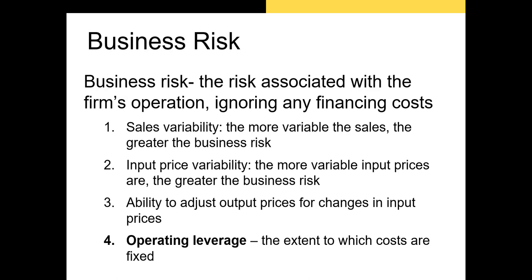There are at least four business risk factors to highlight. The first is sales variability — if a firm's sales are more variable, there's greater volatility in net operating income from quarter to quarter, and the firm could run a net operating loss if sales drop significantly. The second factor is input price variability: if the inputs necessary to produce a firm's products are volatile, the prices passed on to consumers will also likely be volatile.